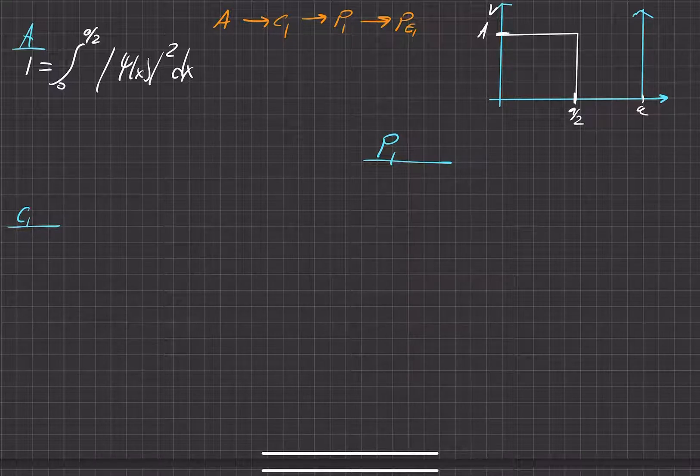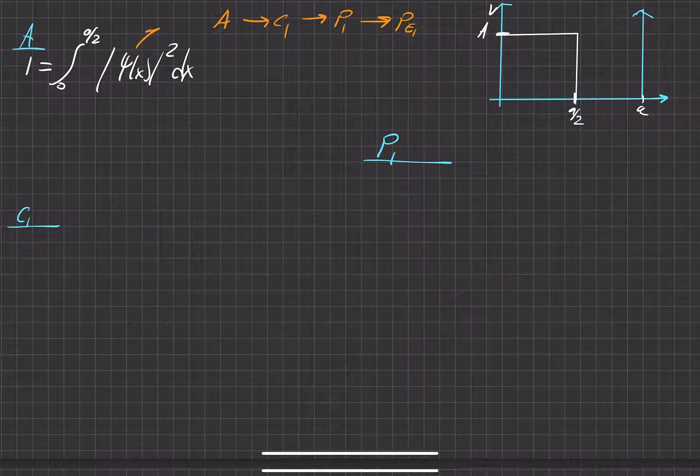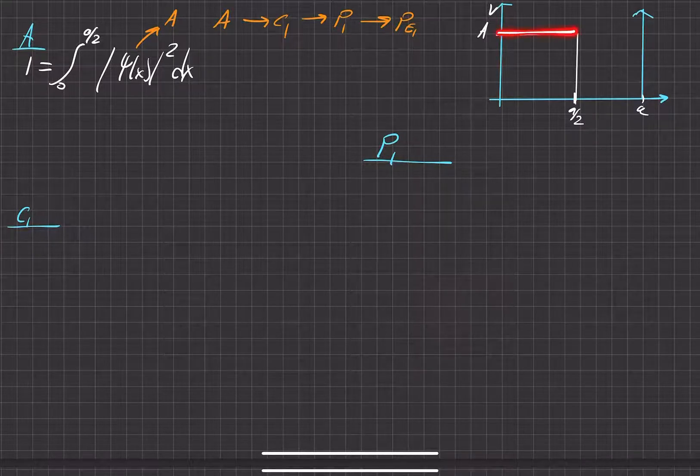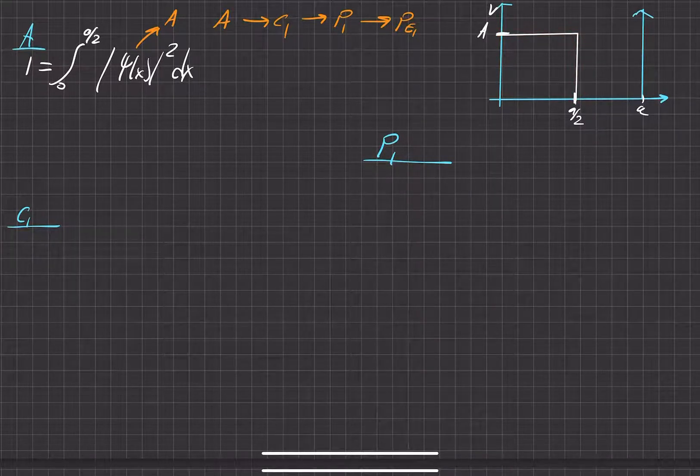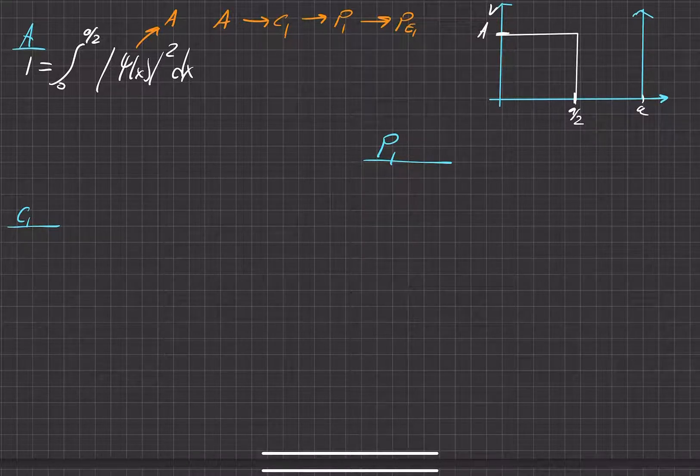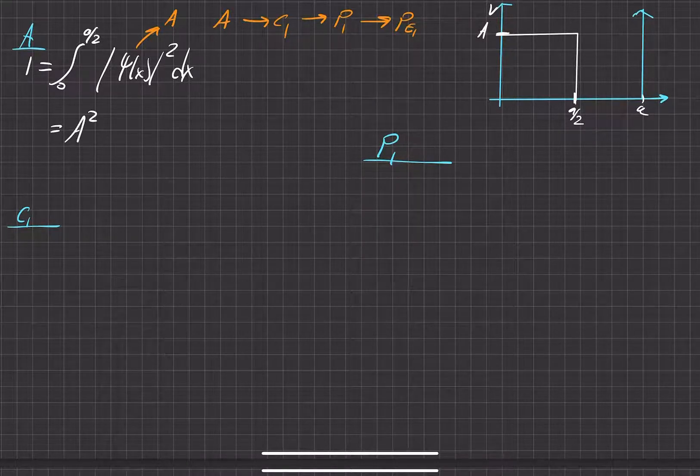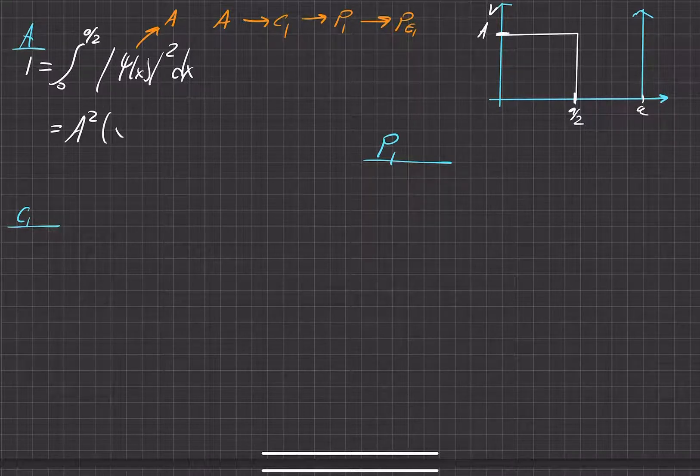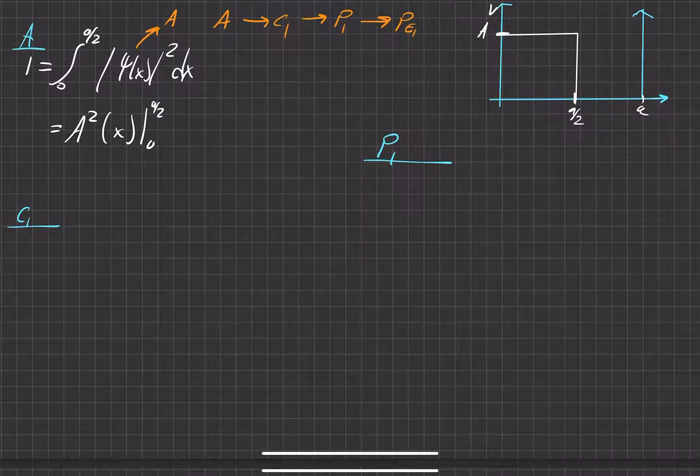Luckily, we were given a pretty easy wave function. That wave function is just constant throughout this side of the potential well. So it's just A. That's a fairly easy integral to solve for. We get A squared is equal to x from a over 2 to 0.